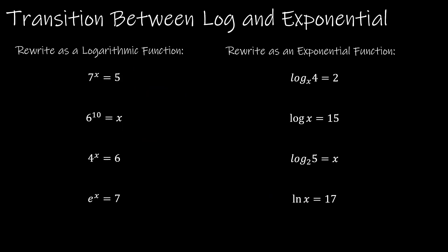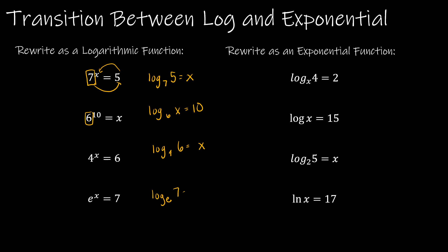Now let's work on transitioning between logarithmic and exponential functions. Using the swirly method — the base is always the base — we rewrite exponential equations as logarithms: 7 to the x equals 5 becomes log base 7 of 5 equals x; 6 to the 10th equals x becomes log base 6 of x equals 10; 4 to the x equals 6 becomes log base 4 of 6 equals x; and e to the x equals 7 becomes the natural log of 7 equals x (since log base e is the natural log).